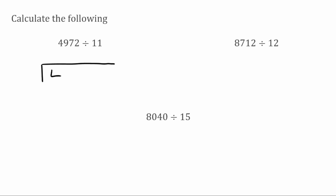For this first question we've got 4972 divided by 11. 11 doesn't fit into 4, so I carry that 4 over to the next digit. 11 fits into 49 four times because 11 times 4 is 44, leaving a remainder of 5. Carrying that over, 11 fits into 57 five times because 11 times 5 is 55, leaving a remainder of 2. Finally, 11 fits into 22 exactly twice. So our final answer is 452.